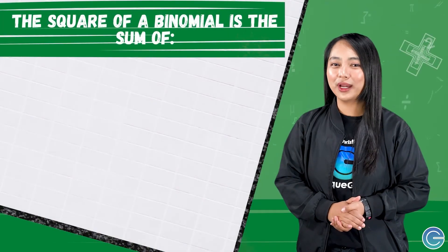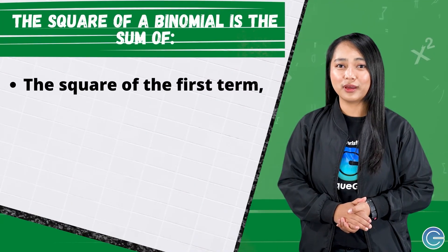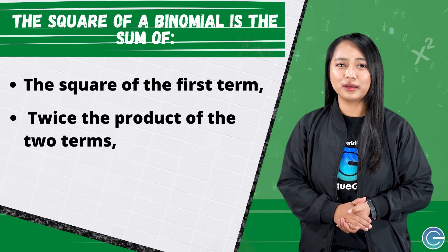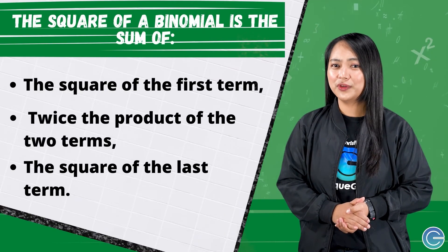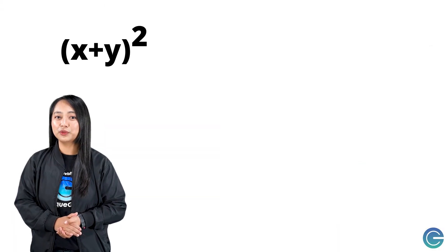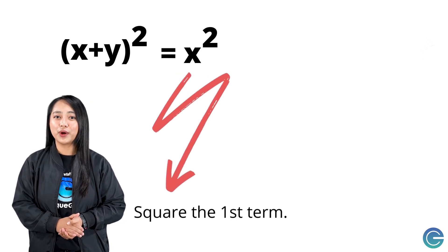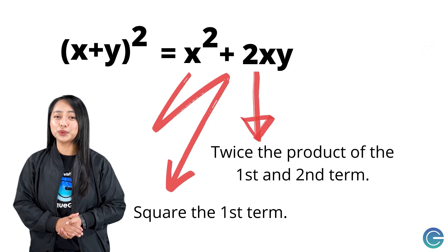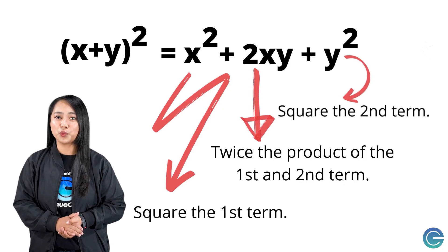Let's take a look at a special rule that will allow us to find the product without using the FOIL method. The square of a binomial is the sum of the square of the first term, twice the product of the two terms, and the square of the last term. So the square of x plus y equals x squared plus 2xy plus y squared.